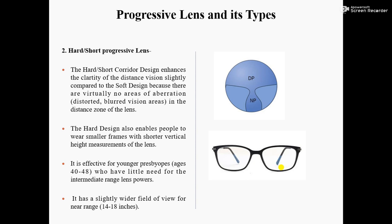The hard oblique short corridor design is effective for a younger age group of 40 to 48 years who have little need for intermediate range lens power. For patients in that age range, the hard oblique short design progressive lens is the better choice.